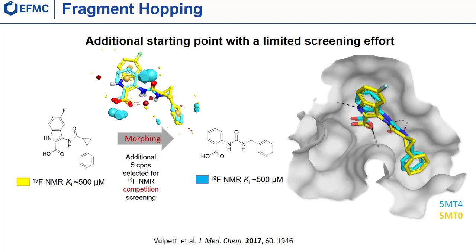A follow-up fragment hopping was also carried out on the compound just described by performing a molecular fields ligand-based 3D similarity search. Out of only five fragments selected by careful visual inspection, one was found to have a Ki value of about 500 micromolar as determined by a fluorine NMR reporter assay. The predicted binding mode based on molecular fields was confirmed by X-ray crystallography. This approach was quite successful in producing an additional starting point for optimization with a limited screening effort, by capitalizing on all the structural knowledge acquired at that point.